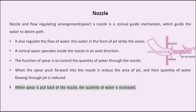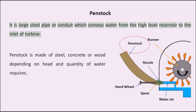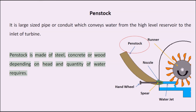Penstock is a large sized pipe or conduit which conveys water from the high level reservoir to the inlet of the turbine. Penstock is made of steel, concrete, or wood depending on the head and quantity of water required.